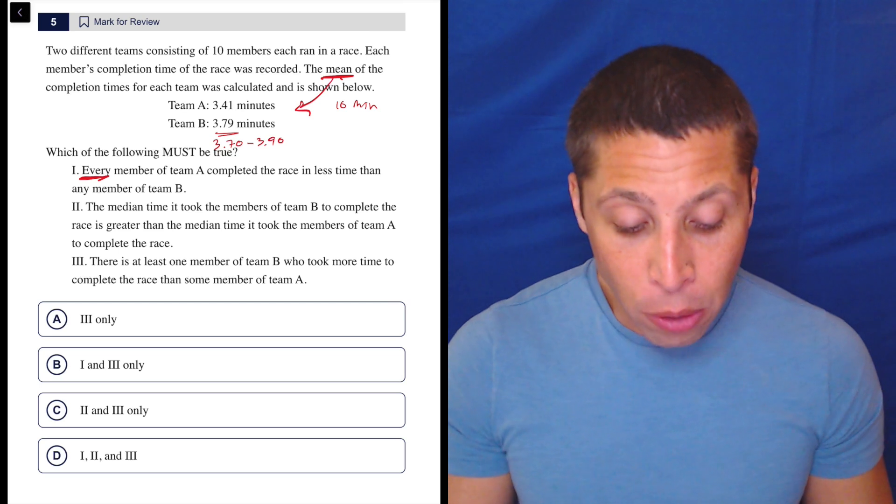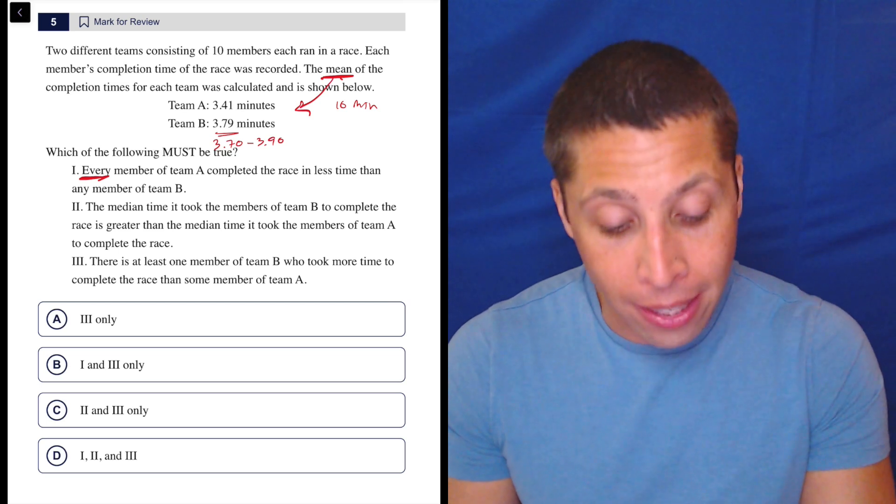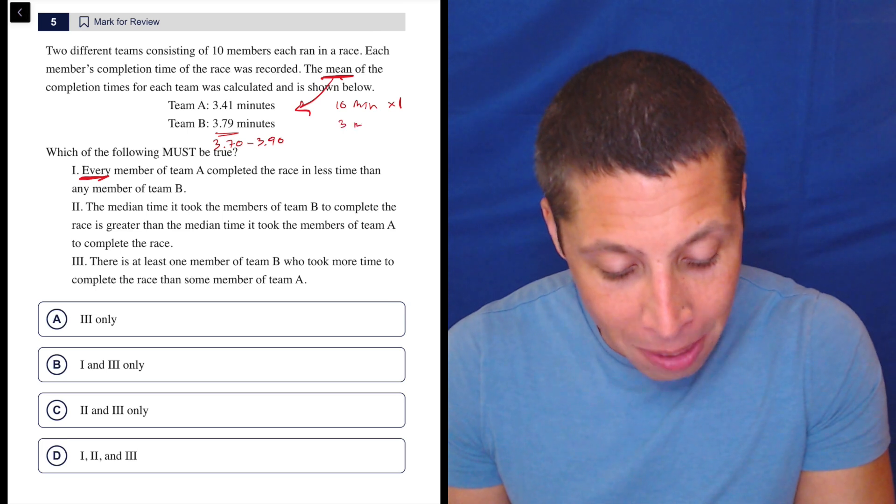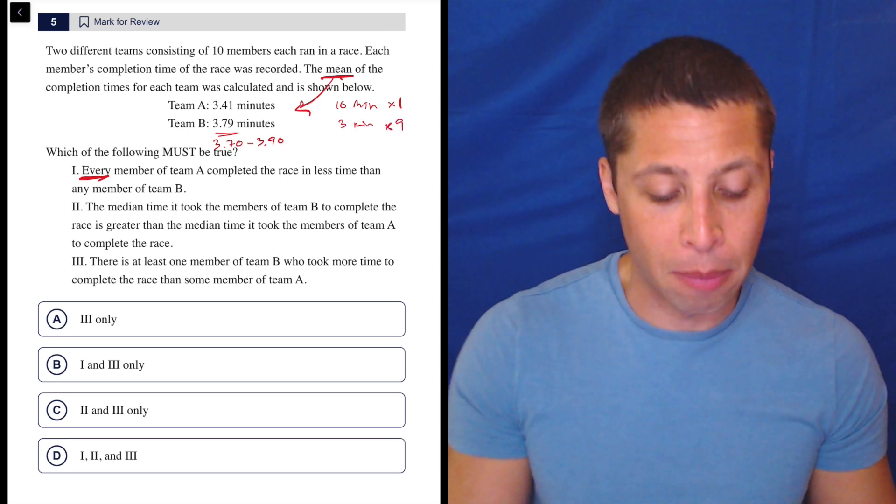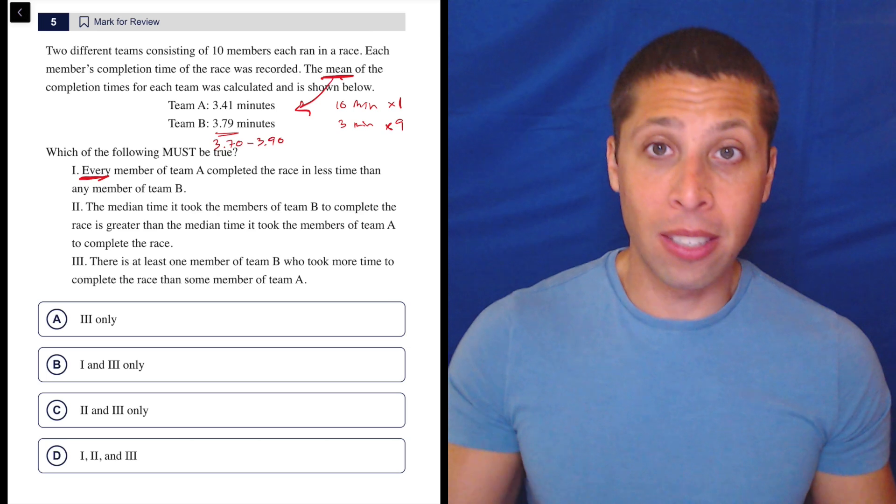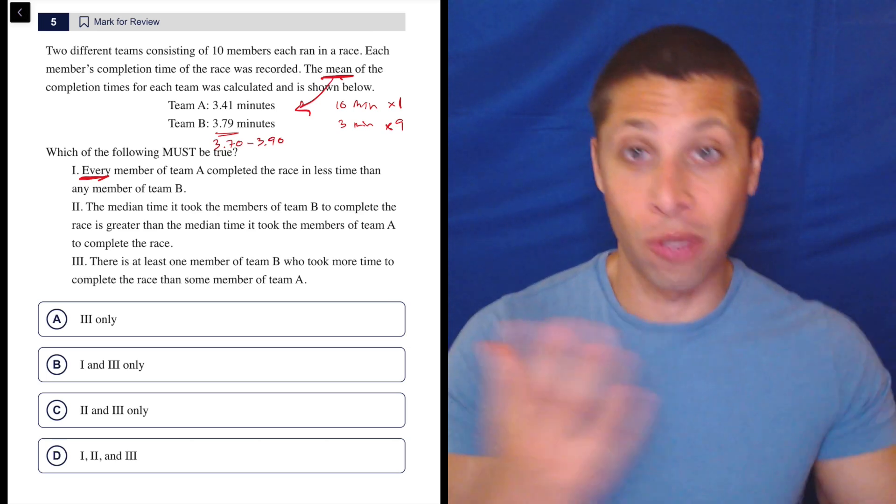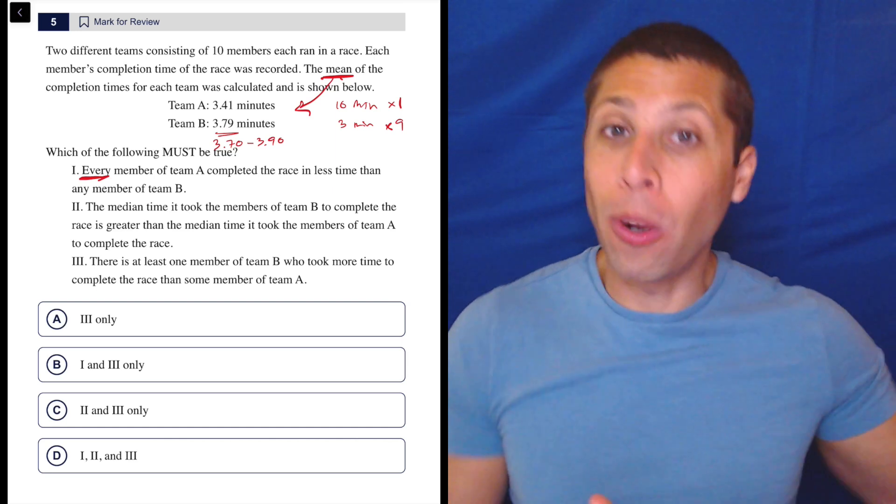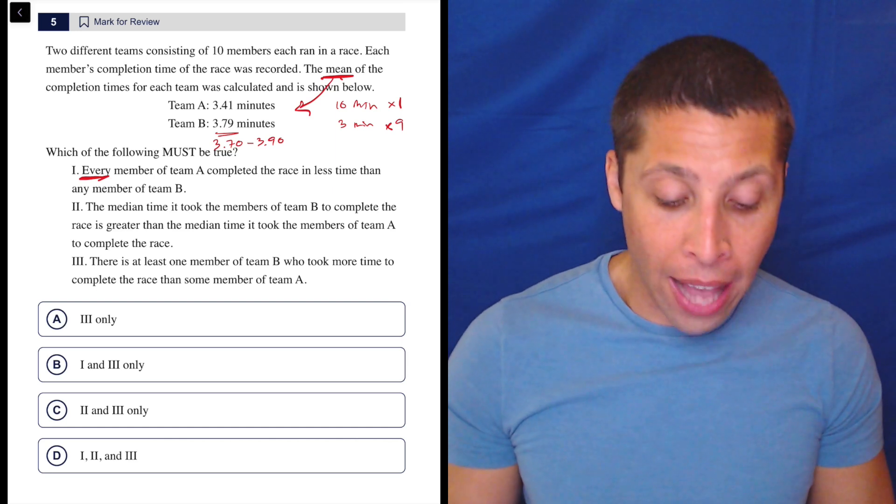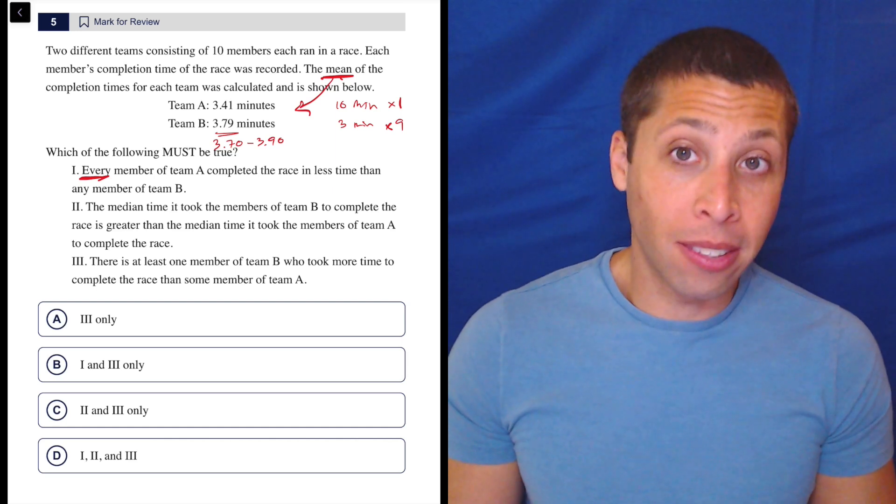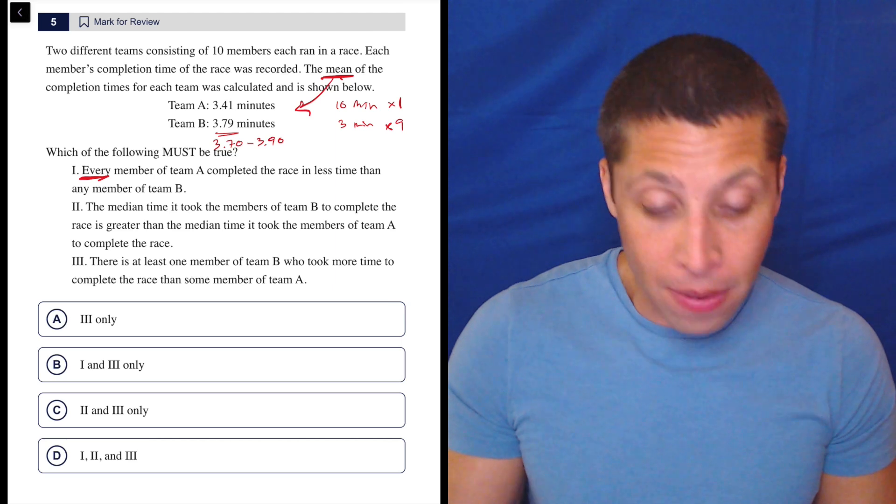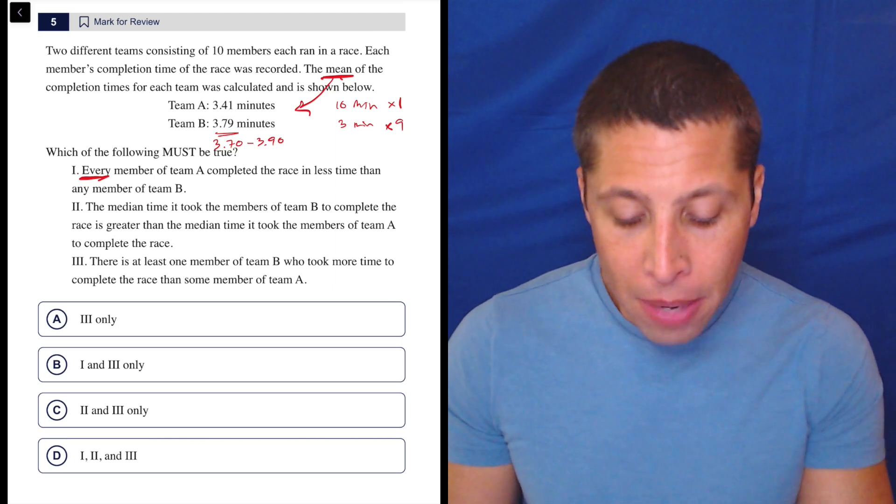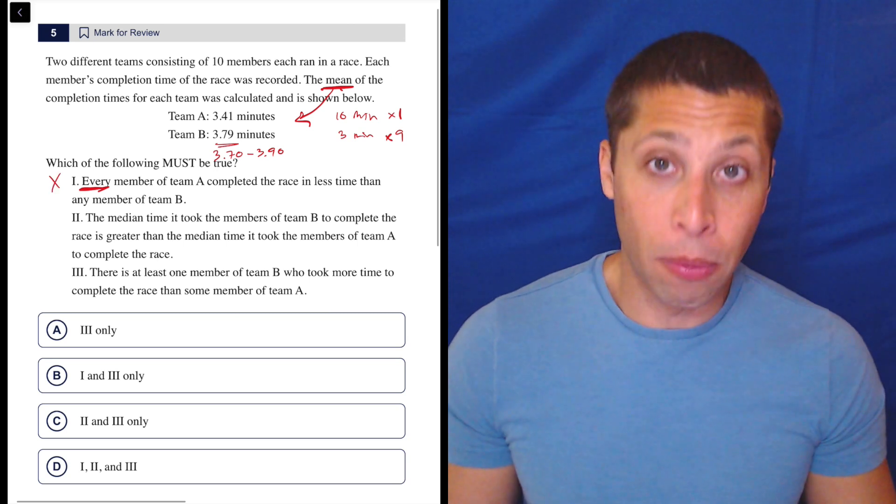If everyone else in Team A was more like three minutes—I'm not actually doing any math here, I'm just estimating—but if everyone else in Team A was really fast and there's just this one slow person, then the average would still be pretty low. But that one slow person would be an outlier and it would be possible that that person took more time to complete the race than every single member of Team B.